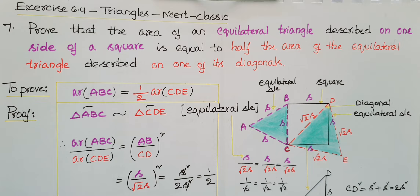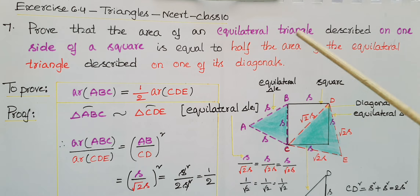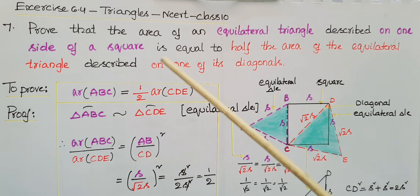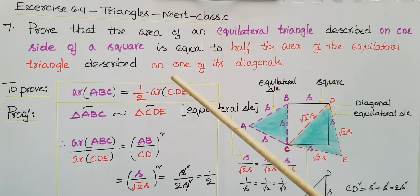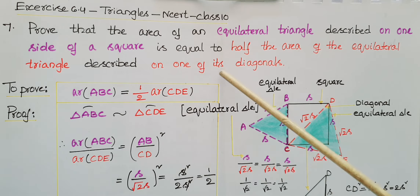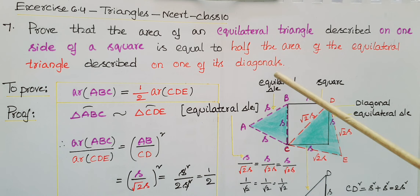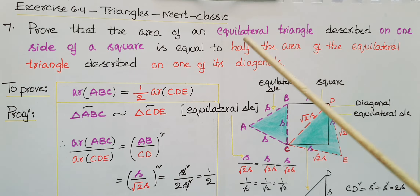Hello everyone, today I am going to tell the solution of the 7th problem from Exercise 6.4 from the Triangles chapter from NCERT Class 10. Prove that the area of an equilateral triangle described on one side of a square is equal to half of the area of the equilateral triangle described on one of its diagonals.